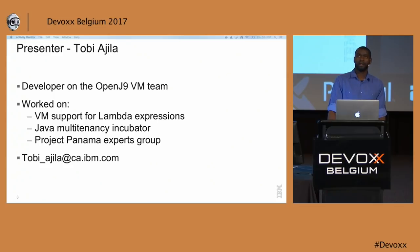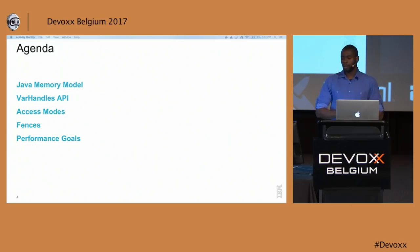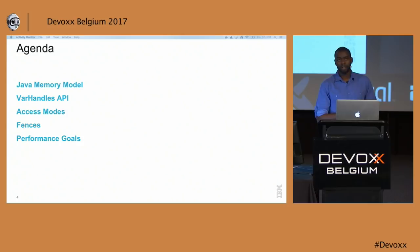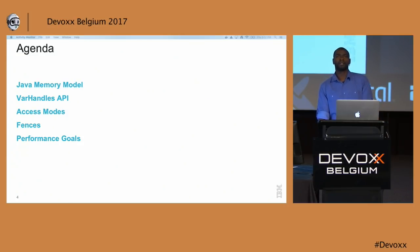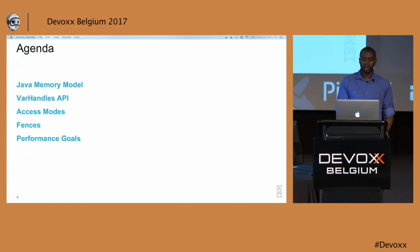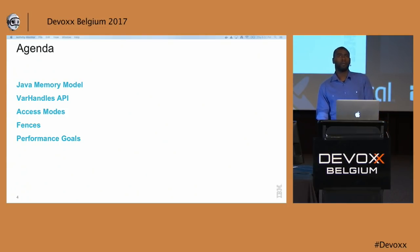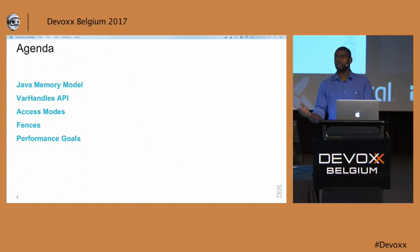I currently participate in the Panama expert group. Here's the agenda for today: we're going to start off with the Java memory model, then we'll take a look at the var handles API, and then we'll go into more detail with access modes and fences, and after that we'll look at performance goals. The purpose of this talk is to motivate the need for a memory model for access modes — why do we need these things — then we'll briefly look at some of the older solutions in pre-JDK 9, and then we'll look at the new solution in JDK 9: var handles.